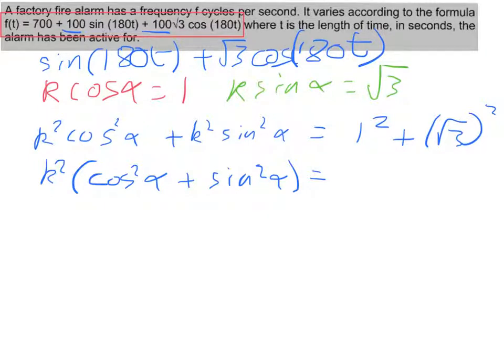Now the reason for doing that is cos squared alpha plus sine squared alpha, that is one of our trig identities. We should know that that will simplify down to 1. I'll deal with this side first though. So 1 squared is 1, root 3 squared, well squaring root 3 will give you just 3. So here I've got k squared times 1, because all of that is equal to 1. So 1 equals, well, 1 plus 3 is 4, so k squared equals 4.